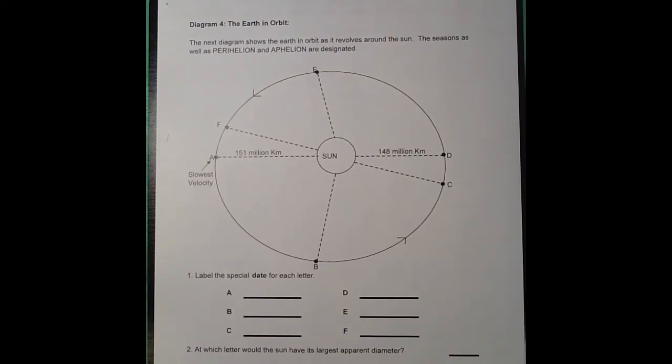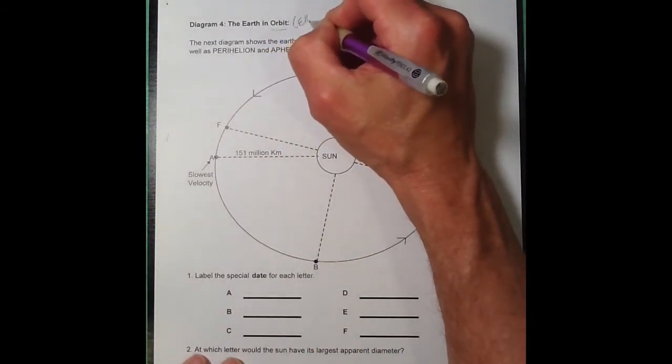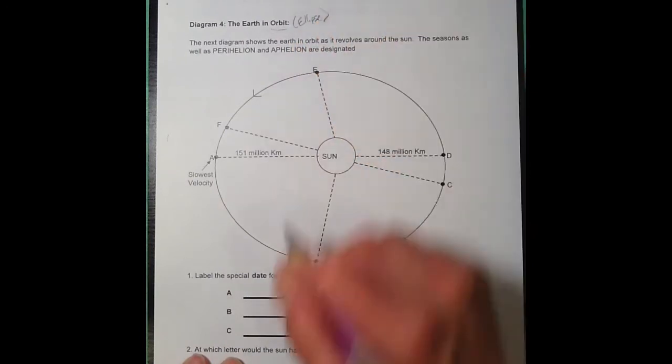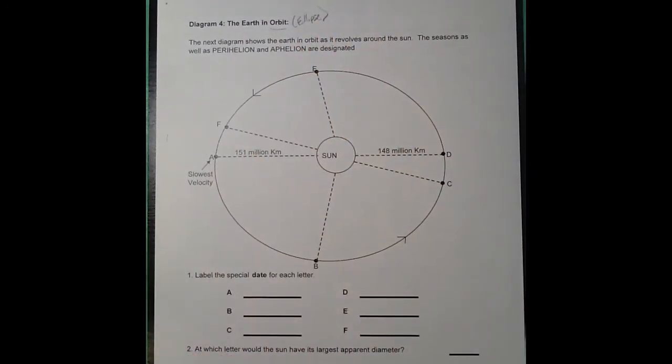Earth's orbit is not perfectly circular. The shape of the orbit, when you look at an orbit, an orbit is an ellipse. But even this diagram over-exaggerates how far from being circular it is. The term they use is eccentricity, and Earth's orbit is really only slightly eccentric.